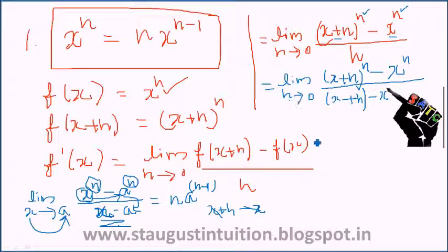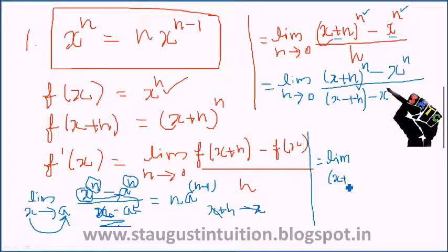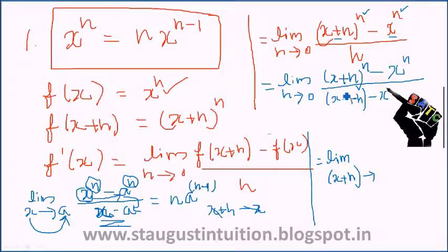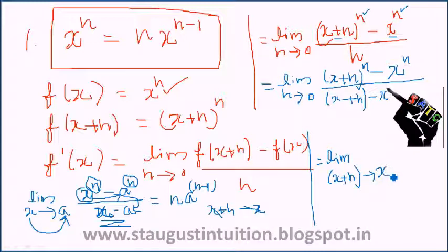We change the limit: as h tends to 0, x plus h tends to x. So the limit variable changes, and x plus h tends to x, which is equivalent to h equal to 0.